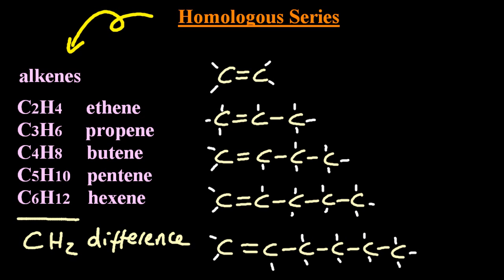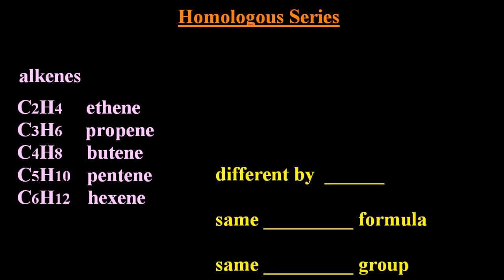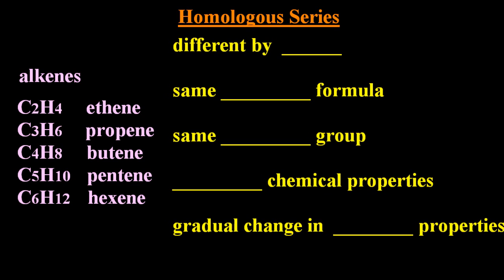Using past papers as our guide, this is what you need to know. Homologous series: sequential members are different by CH2. They have the same general formula, which in this case is CnH2n.